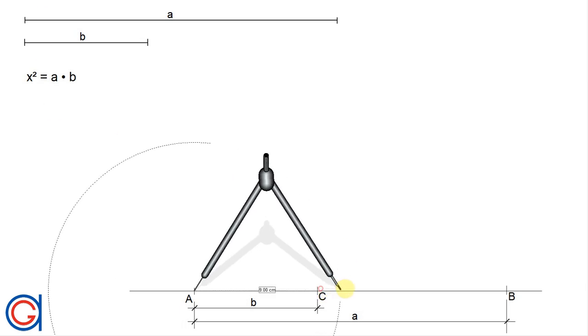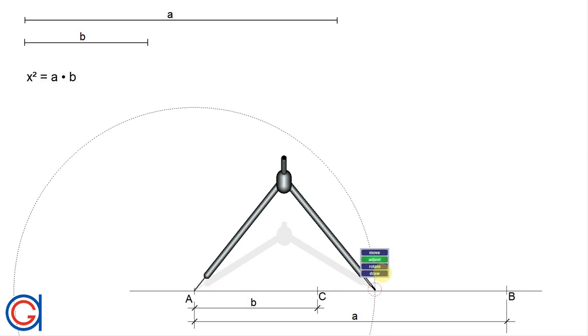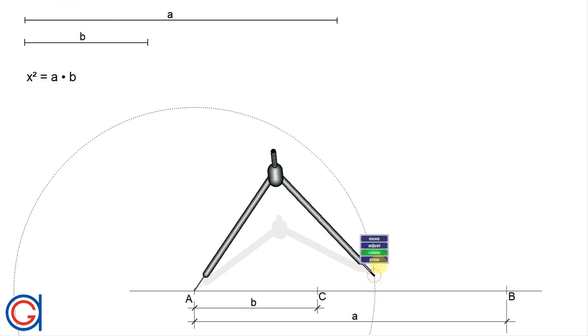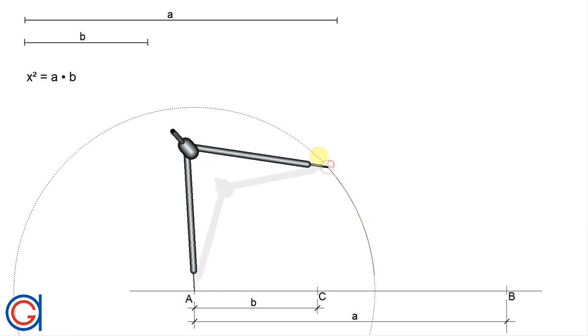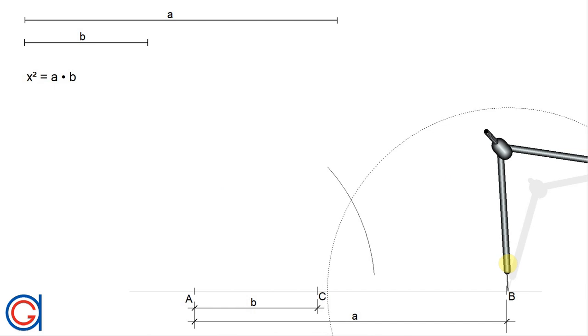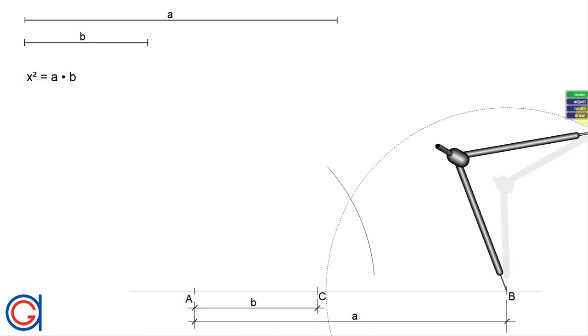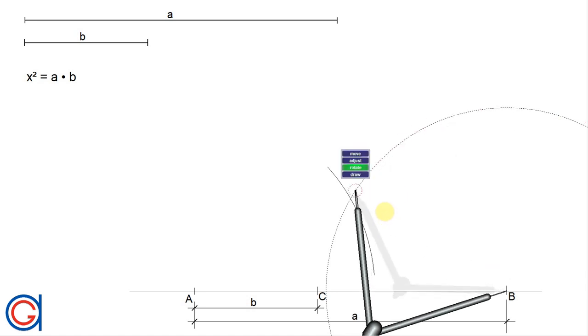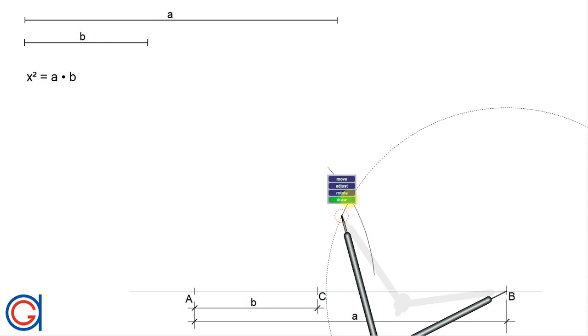To do this, we set our compass slightly longer than half the line segment AB and we scribe an arc to the left as shown here. Now with the same radius and setting the compass on point B, we scribe another arc to the left intersecting our previously drawn arc.